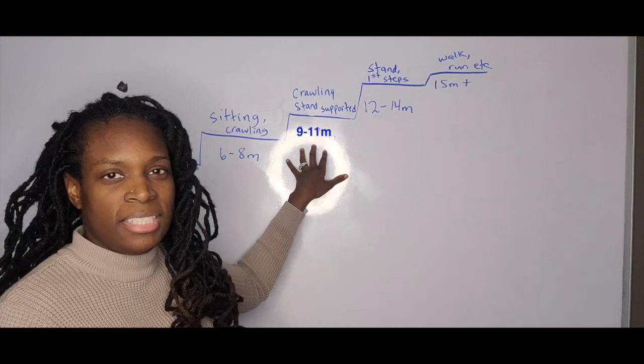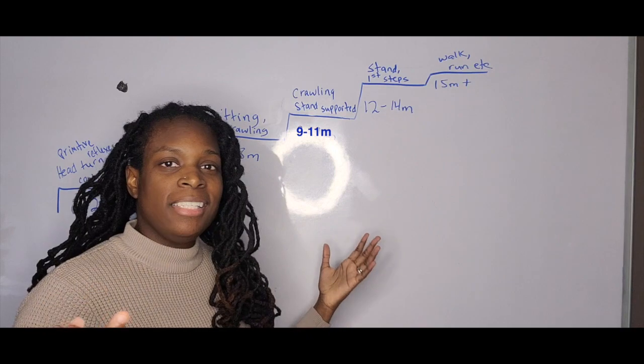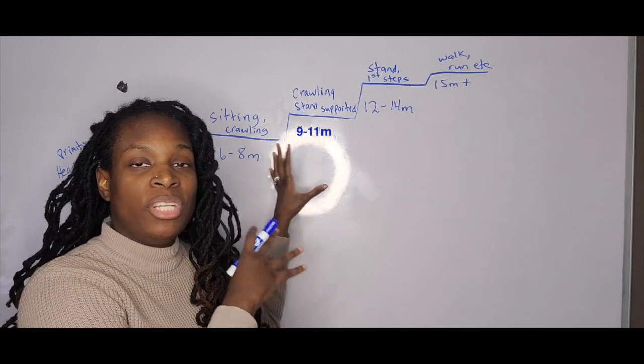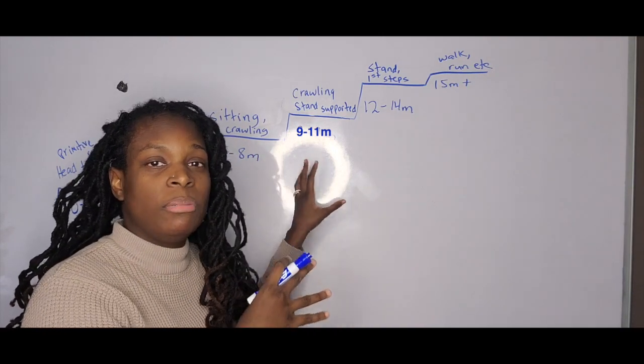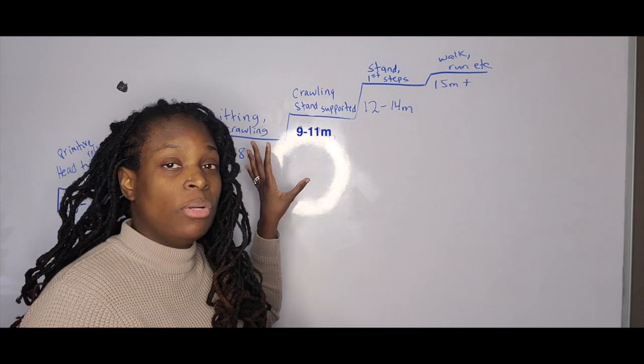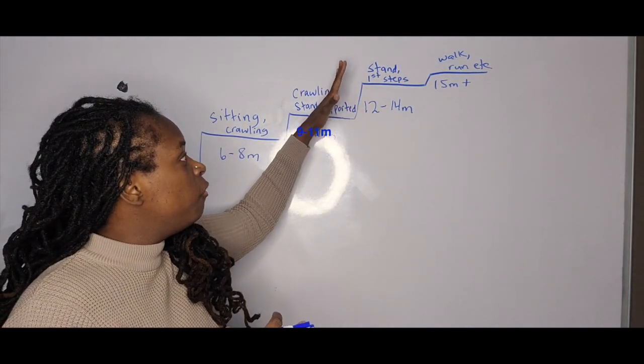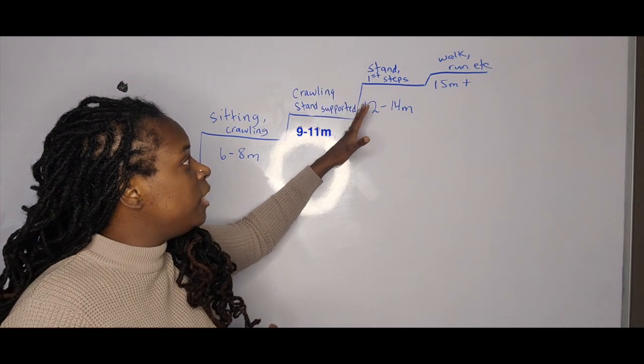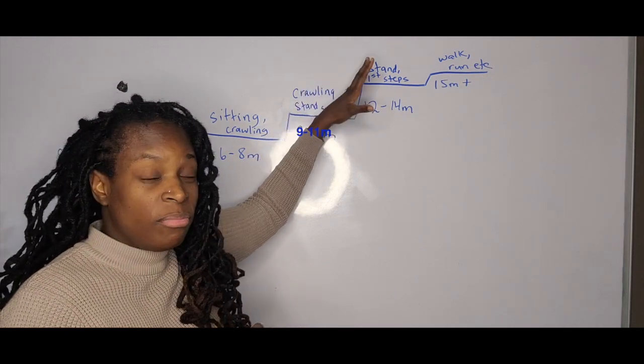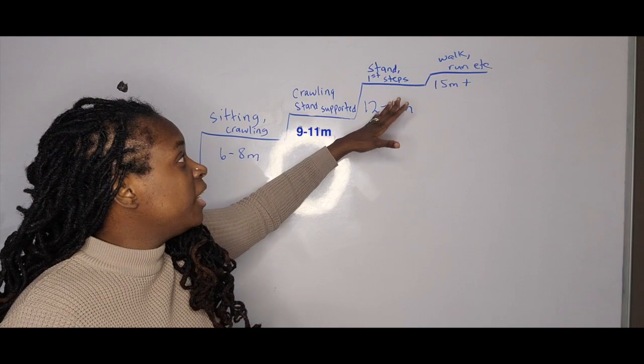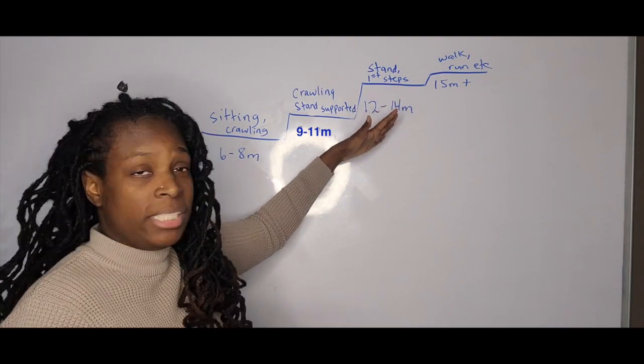This tends, you tend to see this from like nine to 11 months. Again, like I said, some kids can reach these milestones faster than others, but you want to have a general understanding of what's considered normal. Then the next step moving up. So from crawling and standing, you want to move up to around 12, 12 months or 14 months. Now you're looking at standing and taking first steps.